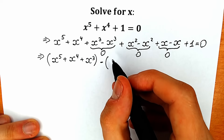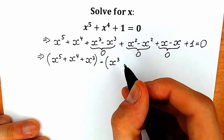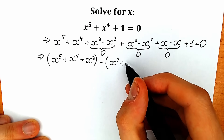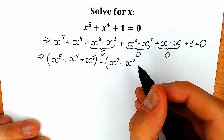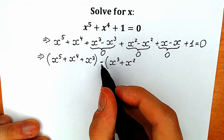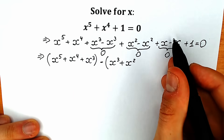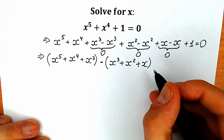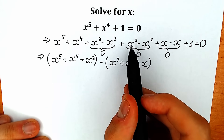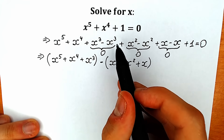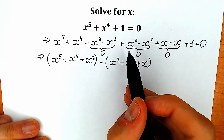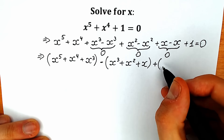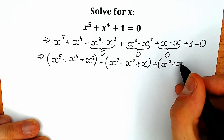In the second parenthesis, because of the negative sign before the parentheses, we take minus x cube and write plus x square inside. And we take minus x, but because of that minus sign we have plus x inside parentheses. In the last group we take x square, x, and one, so we have plus x square plus x and plus one.